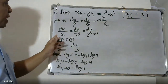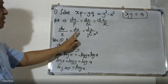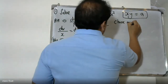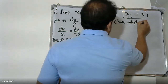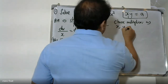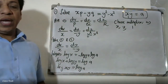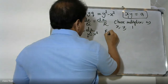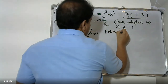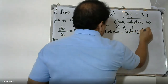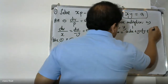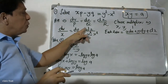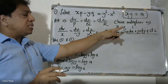For the second solution, we use the multiplier method. We can write each ratio as equal to (x dx + y dy + dz) divided by an appropriate combination of the denominators, using multipliers x, y, and 1 respectively.